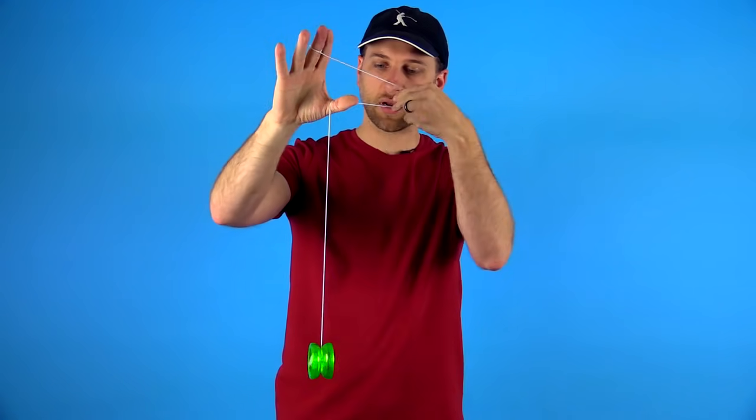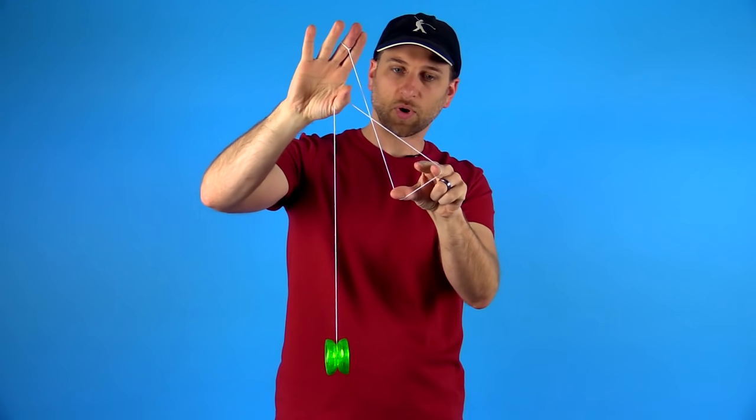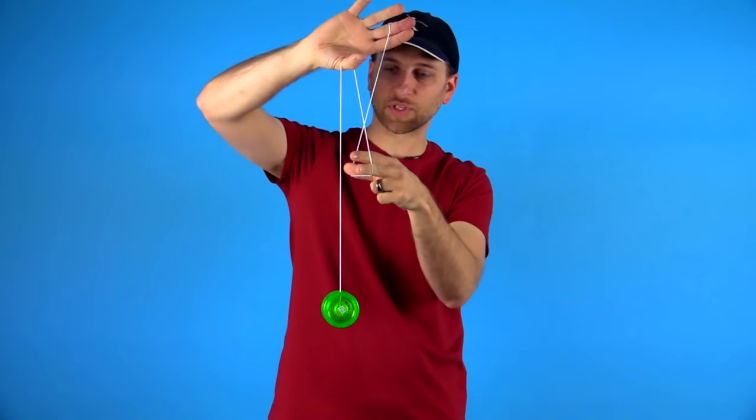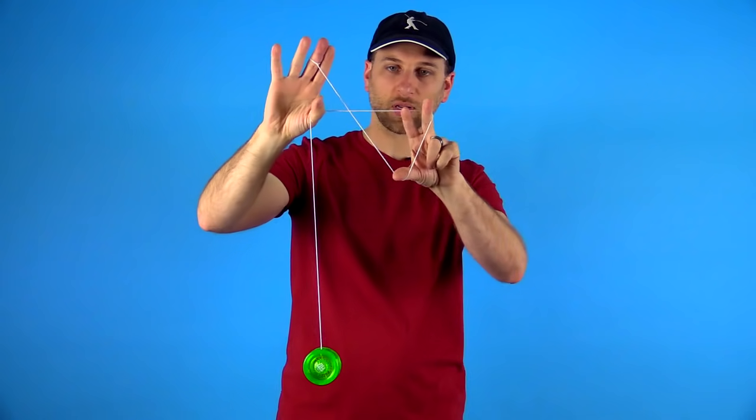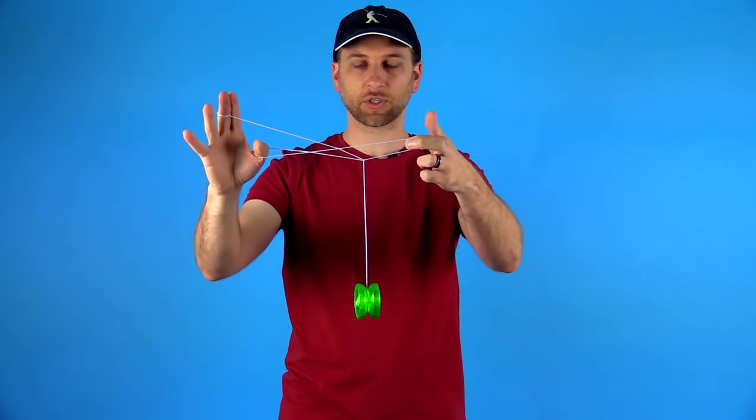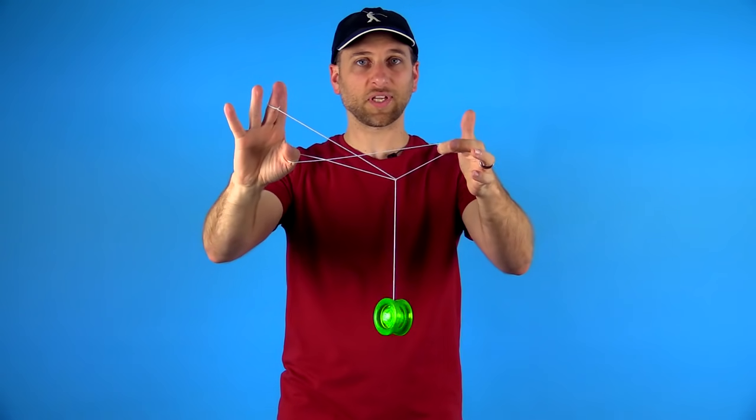Step two is where we're going to thread the needle. We're going to come down here and see how when we bring our opposite hand down it makes this little triangle with the string. So we're going to use our first finger that is now free on our opposite hand, we're going to grab the string coming up off the yo-yo, and we're going to thread it through this triangle right here. As you do that, let the rest of the string drop off of your opposite hand, and you'll be set up just like this.